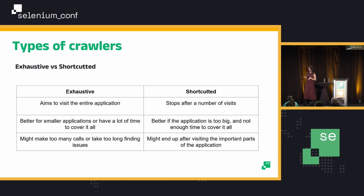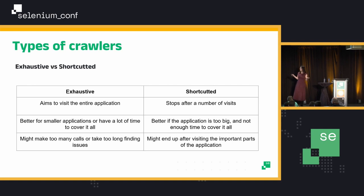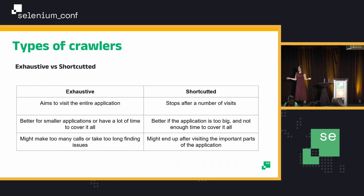You can also have exhaustive versus shortcutted. Exhaustive means you're going to cover the entire application. However, shortcutted means you have just a number of time or number of views that you're going to visit, and then at some point you're done with it. The exhaustive is better for a smaller application, and shortcutted is better if your application is very big and you don't want to go through the whole thing. The exhaustive may make too many calls, so you may run into denial of service. And the shortcutted may escape important things. So you always have to keep a balance, and you can find the right balance where you shortcut it.